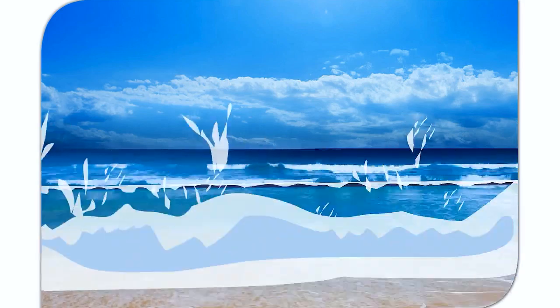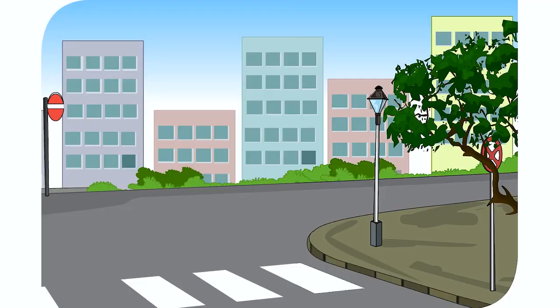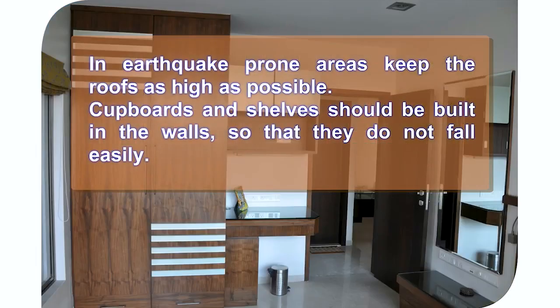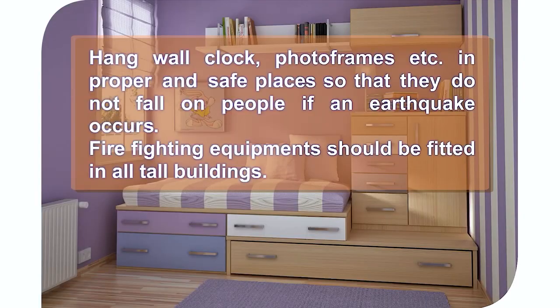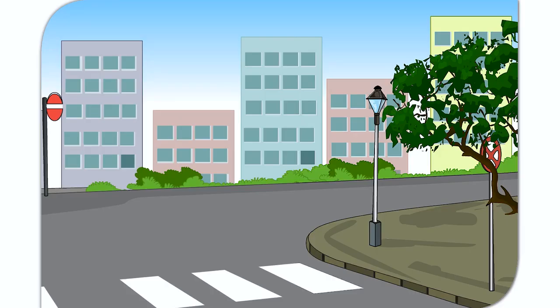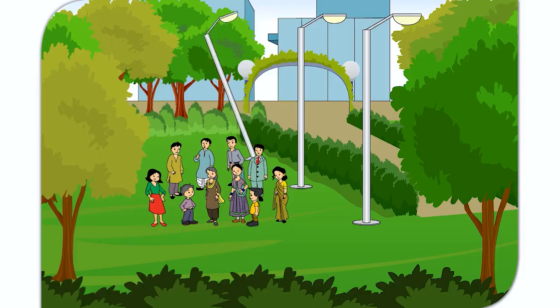They also cause a lot of damage to life and property. Buildings and houses can be made earthquake-proof in earthquake-prone areas. Keep the roofs as light as possible. Cupboards and shelves should be built in the walls so that they do not fall easily. Hang wall clocks, photo frames, etc. in proper and safe places so that they do not fall on people if an earthquake occurs. Firefighting equipment should be fitted in tall buildings.